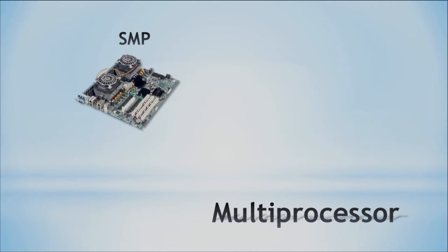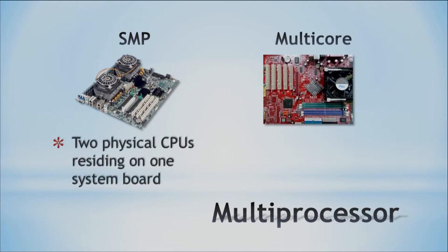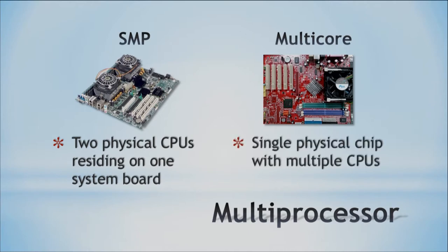Something that's been done to help improve speed is moving to multi-core. But before multi-core, there was an older technology called SMP — symmetric multiprocessing. It was a multiprocessor system where you actually had two physical CPUs on the same motherboard. Now with multi-core, we have one physical CPU that contains multiple processing cores. So technology has advanced from having two separate physical CPUs to having multiple cores within one chip.